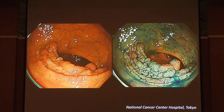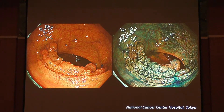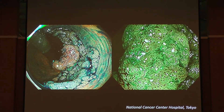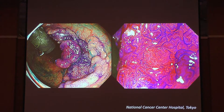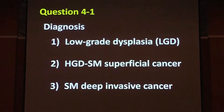The next case is Case 4. This lesion is located in the rectum. In a straight view, here is the white light imaging and the initial indigo carmine view. And this is a retroflexion view where we can visualize the whole image of the lesion, followed by a magnified NBI image.